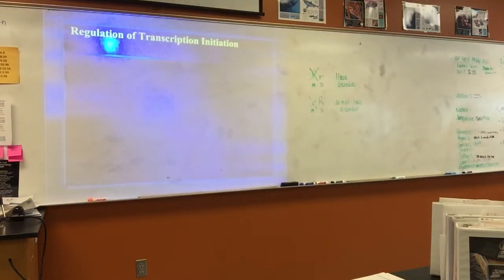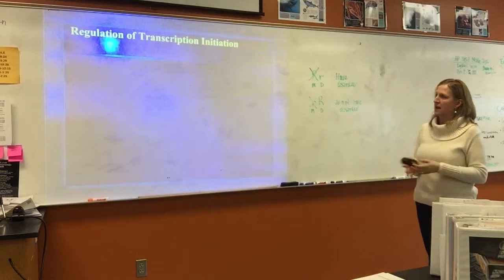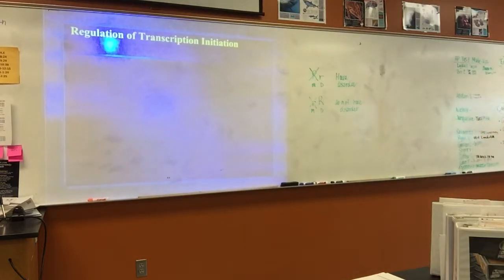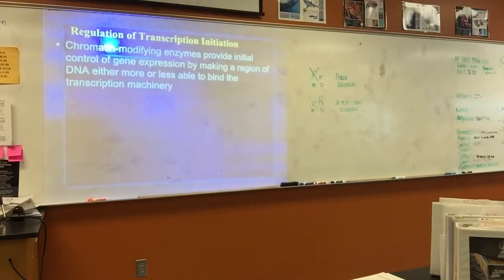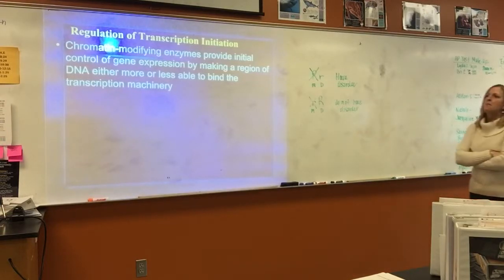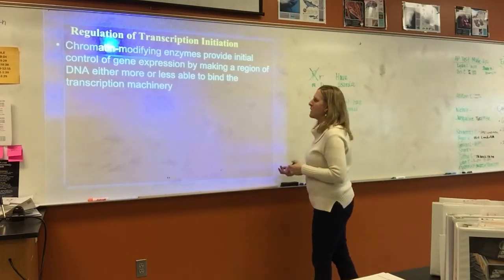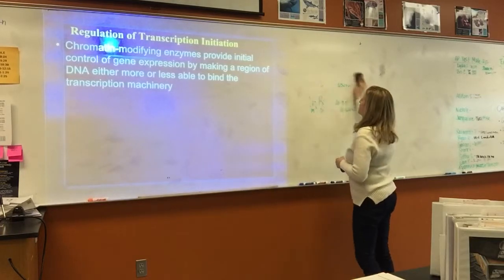So that's pre-transcription. Methylating makes transcription not be able to happen, and adding acetyl groups makes it be able to happen. So let's say transcription is going to occur — how do we regulate transcription? This is the most important — this is the main way that we regulate gene expression is through transcription.